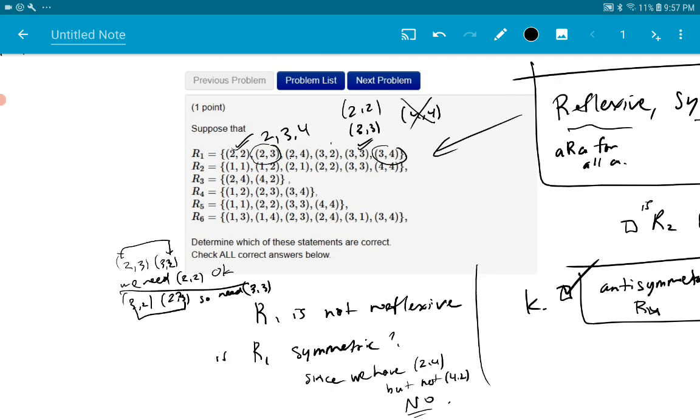So since I have 2,3 and I have 3,4, that means since the middle numbers are the same, I need to have 2,4. Otherwise, it'll fail transitivity. Do I have 2,4 in here? I do. It's right there. So, so far we're good. What else? I have 3,2, 2,3 and I have 3,3. I have 3,3. I have 3,4.